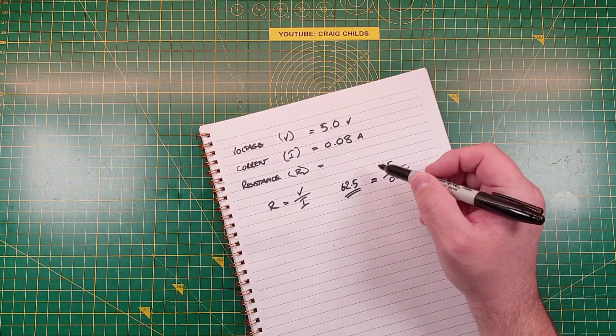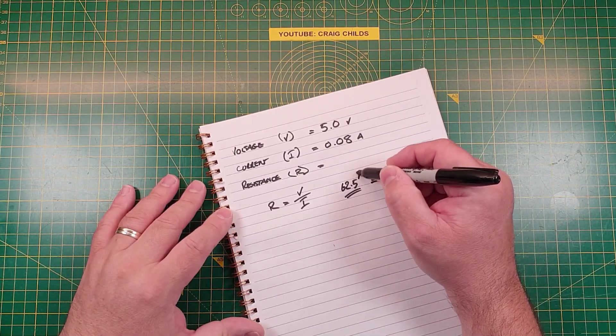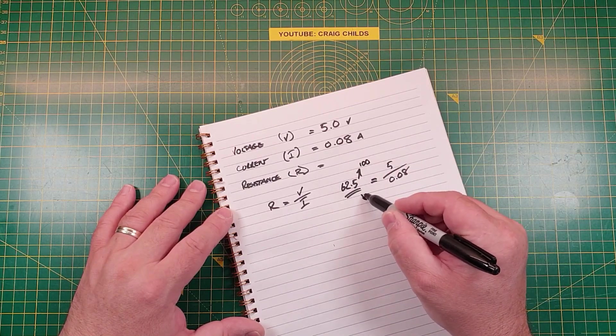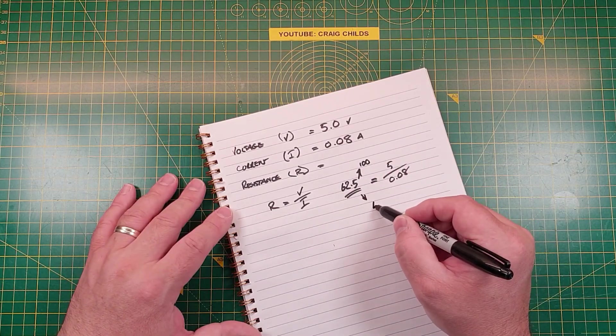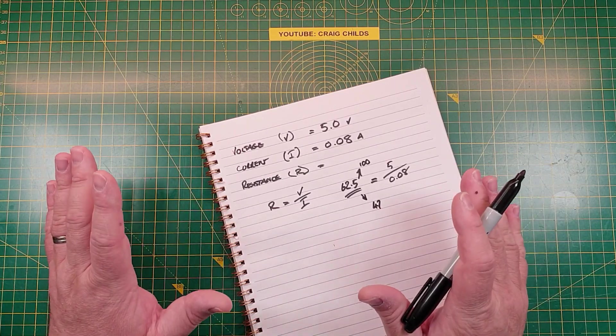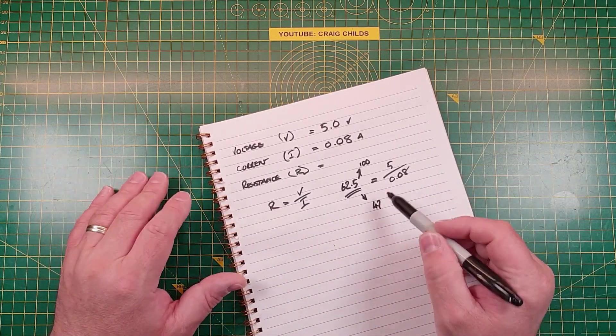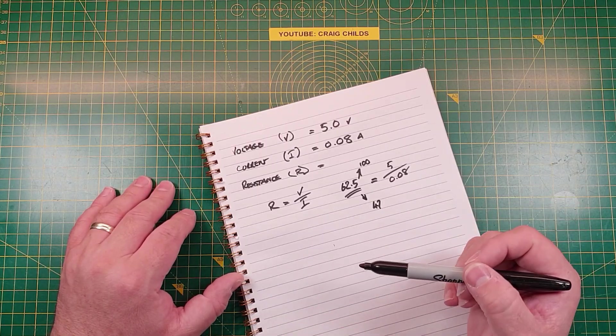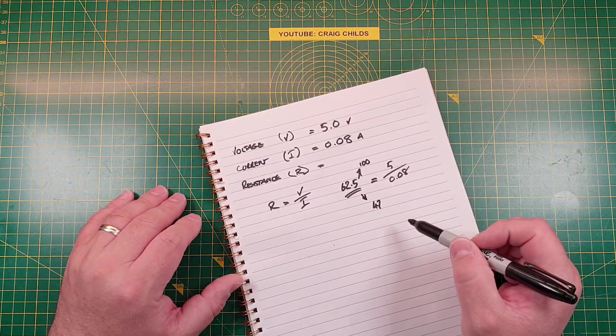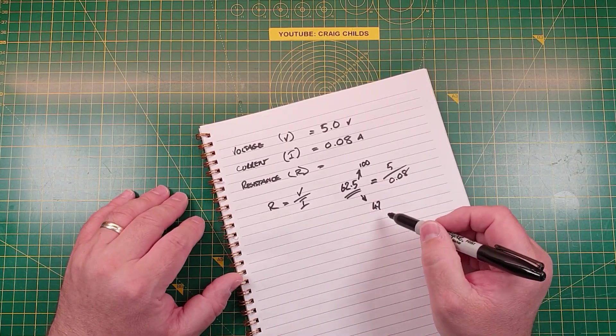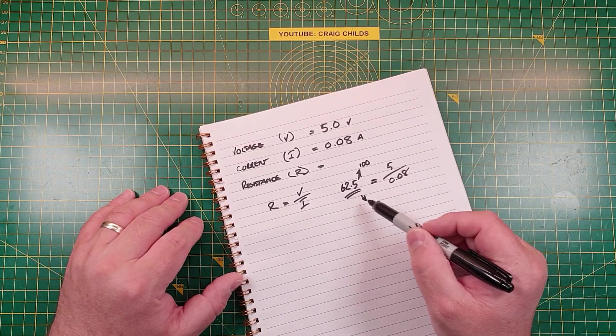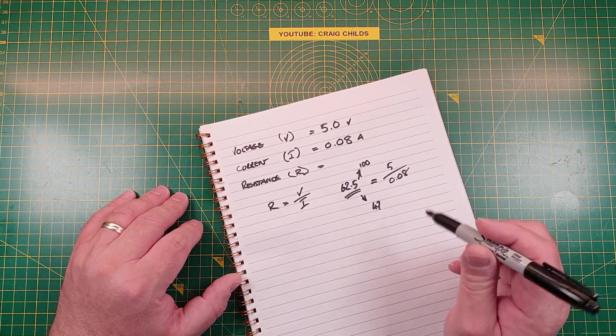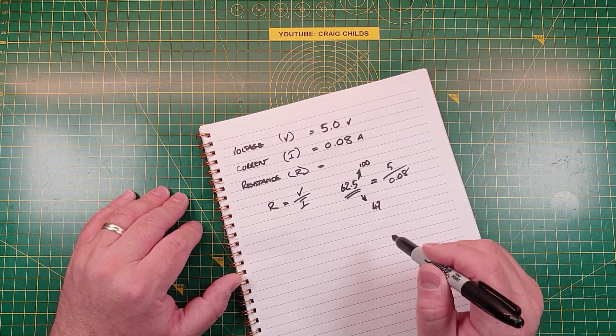You could use all sorts of resistors to combine them in series to get to that value, but that's a whole lot of fuss for not a lot of gain. So what we can do here is our 62.5, we can choose the next nearest resistor. We've got two options here: we can either go up in resistance to 100 ohms, or we can go down in resistance and the next nearest one that I would have would be 47 ohms.